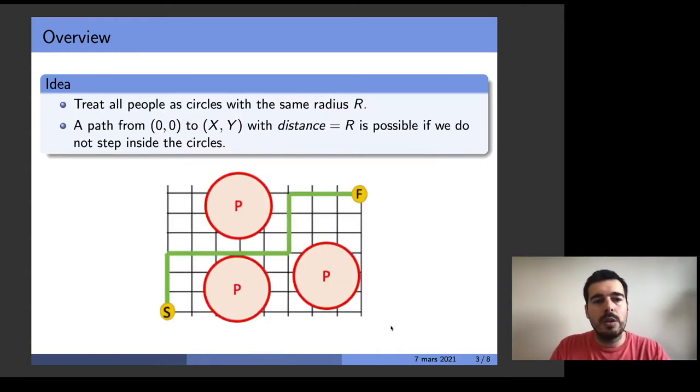One idea is to treat all people as circles with the same radius r. A path with distance r is possible if we don't need to step inside the circles.